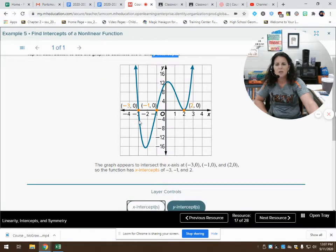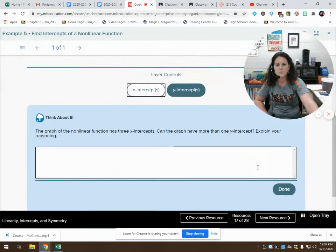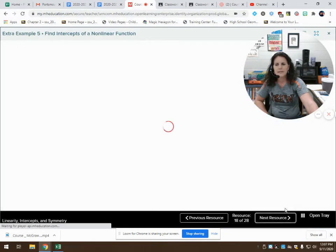With the x intercept, I'm looking for what values of x have a corresponding y value of zero. I've got negative three, negative one, and two.